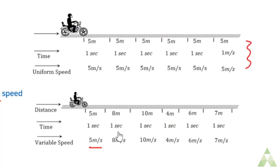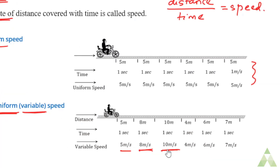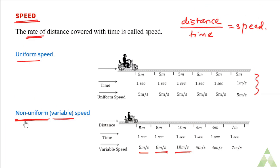Now if the speed changes — say it goes 8 meters in one second, then 10 meters in the next second — the speed has changed from 8 meters per second to 10 meters per second. Different intervals of time give different distances. Then we would say it is undergoing non-uniform motion, or its motion has non-uniform speed.